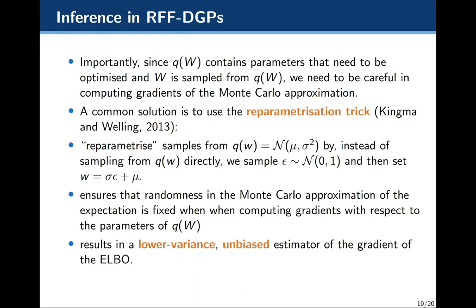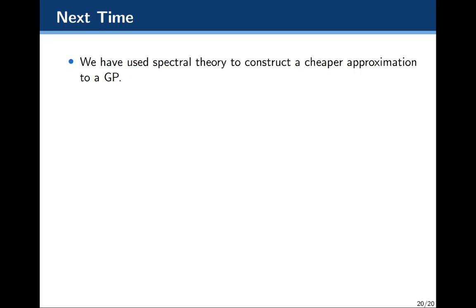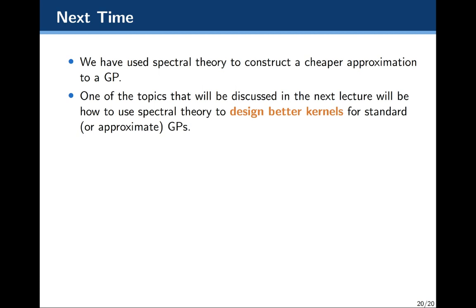There's been other work in machine learning looking at the variance of this estimator — it's a pretty important topic in approximate inference, and there are other methods which extend the reparametrization trick to get even lower variance estimators. That concludes the part where we talk about constructing cheaper approximations to Gaussian processes or deep Gaussian processes using spectral theory, and in particular random Fourier features. Next time we're going to look at the other side of the coin: instead of using spectral theory to approximate a predetermined kernel, can we use these tools to actually design better kernels for standard Gaussian process use?